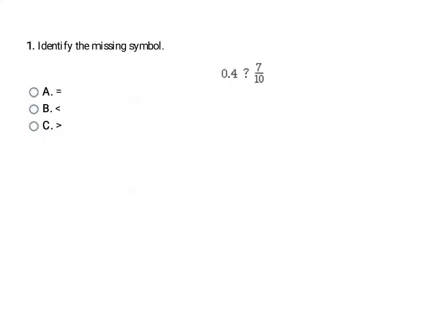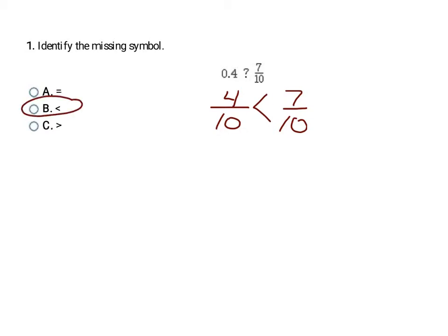When comparing two numbers, they have to be in the same form — all decimals, all percents, or all fractions. For this problem, since the last digit is in the tenths place, I'll convert 0.4 to the fraction 4/10. Comparing that to 7/10, which has the same denominator, 4/10 is smaller than 7/10, so I use the less than symbol. That makes the final answer B.